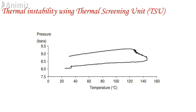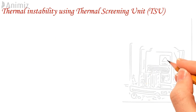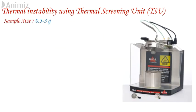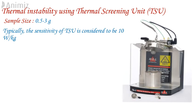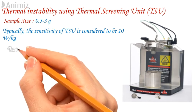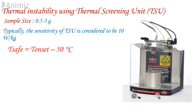Basis of safety: a small sample size of 0.5 to 5 grams is considered while performing a TSU experiment. Hence, the results obtained may not be fully accurate, because as the scale increases, the surface area to volume ratio decreases and accordingly the time required to cool also increases drastically. Typically, the sensitivity of TSU is considered to be 10 Watts per kg, which is less sensitive. To overcome this, a safety factor of 50 degrees Celsius is widely used. A correction between safe operating temperature and onset temperature is: T-safe = T-onset − 50°C.